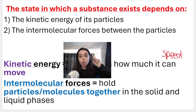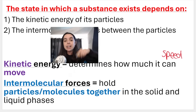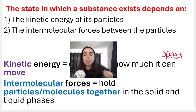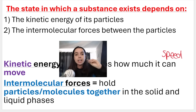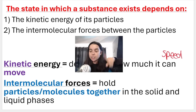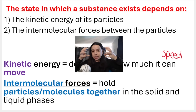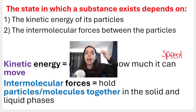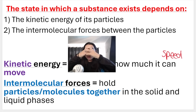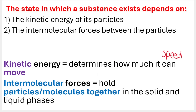Another reminder from last year: the state that a substance exists in — whether solid, liquid, or gas — depends on two things mainly: the kinetic energy of its particles, and the intermolecular forces between the particles. Gases have very high kinetic energy; the particles move about very quickly. In a gaseous state, the intermolecular forces are present but very weak. Contrast this with solids, where the kinetic energy of the particles is lower and the intermolecular forces are much stronger.